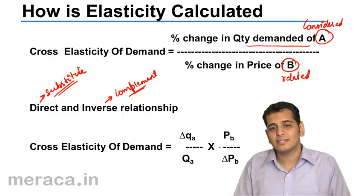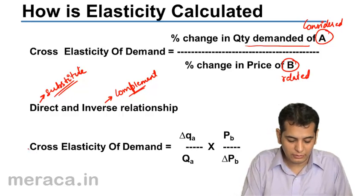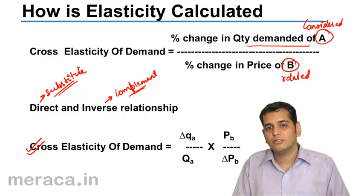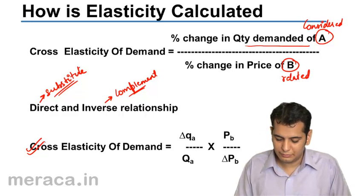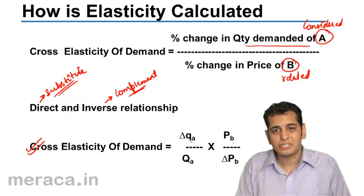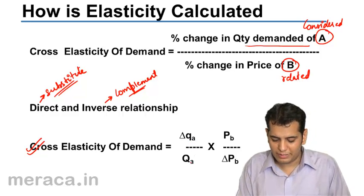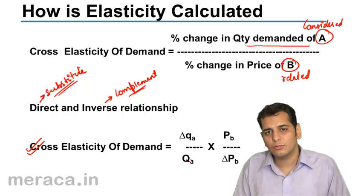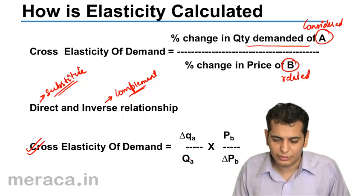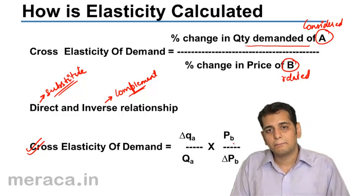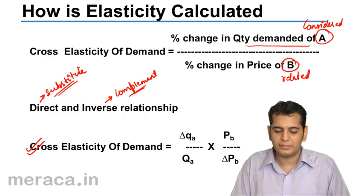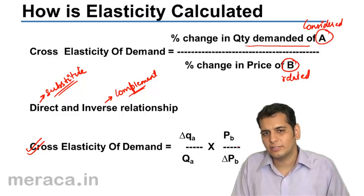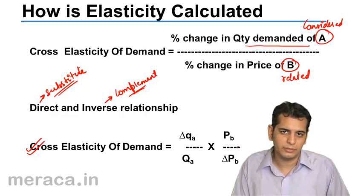Like price elasticity, we also have another formula for calculating cross elasticity, which is: change in quantity demanded of good A divided by the original quantity of good A, multiplied by the price of the related good B divided by the change in price of related good B.